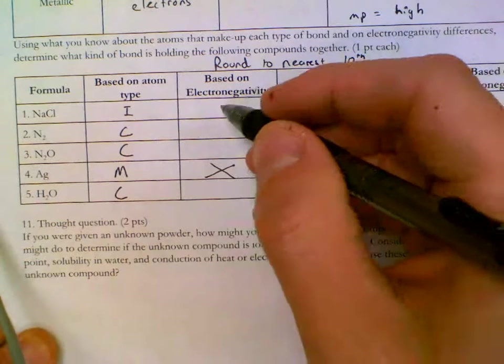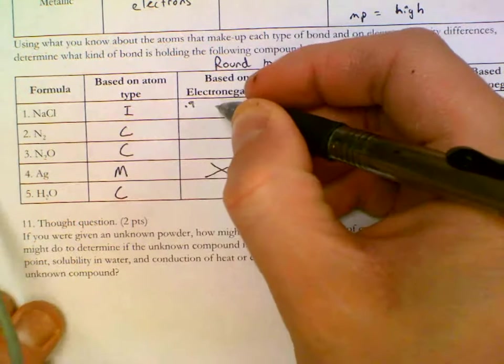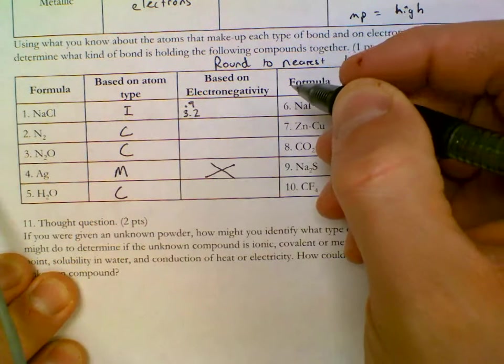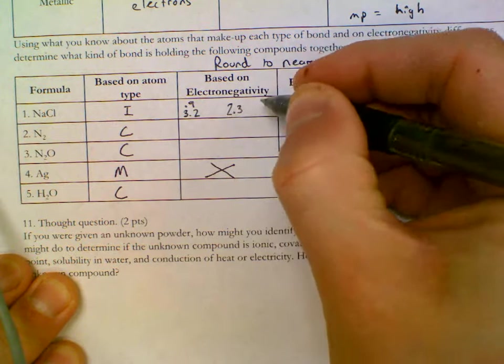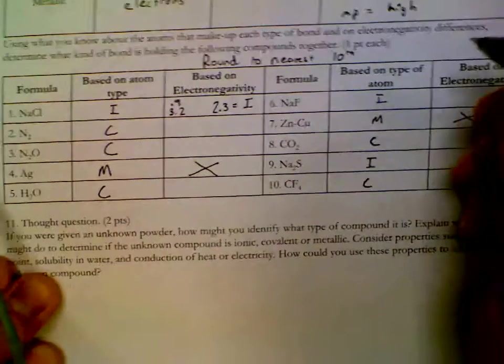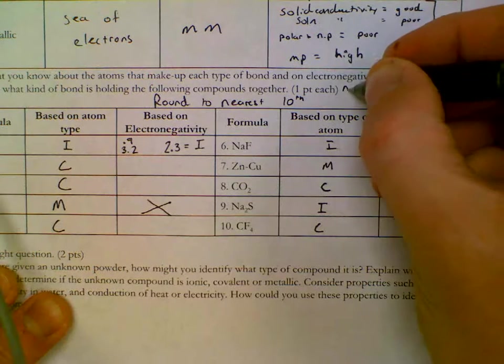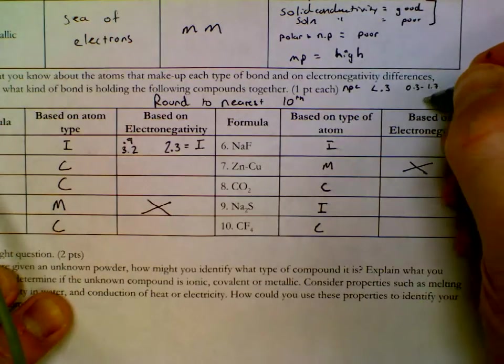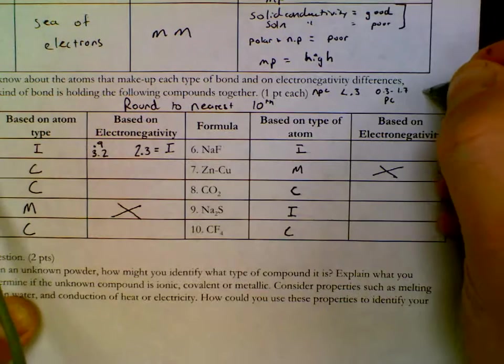So for this top problem, sodium on the table is 0.93. I'm going to say it's 0.9. And then chlorine is 3.16, so 3.2. 3.2 minus 0.9 would be 2.3, and that would make this ionic. And we're recalling, hopefully, that less than 0.3 is going to be nonpolar covalent. 0.3 to 1.7 will be polar covalent. And then greater than 1.7 will be ionic.